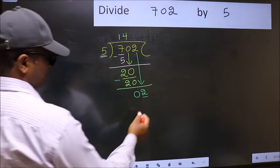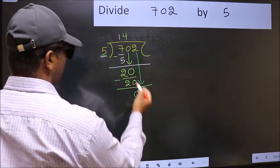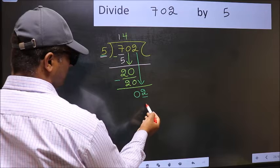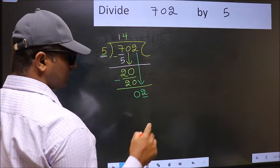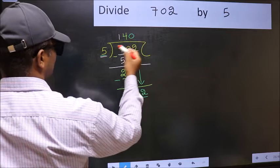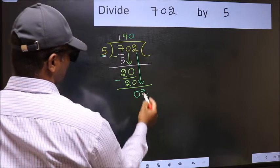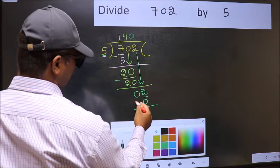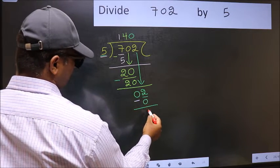If I take 1 here, we will get 5. But 5 is larger than 2. So what we should do is, we should take 0. So 5 into 0, 0. Now you should subtract. 2 minus 0, 2.